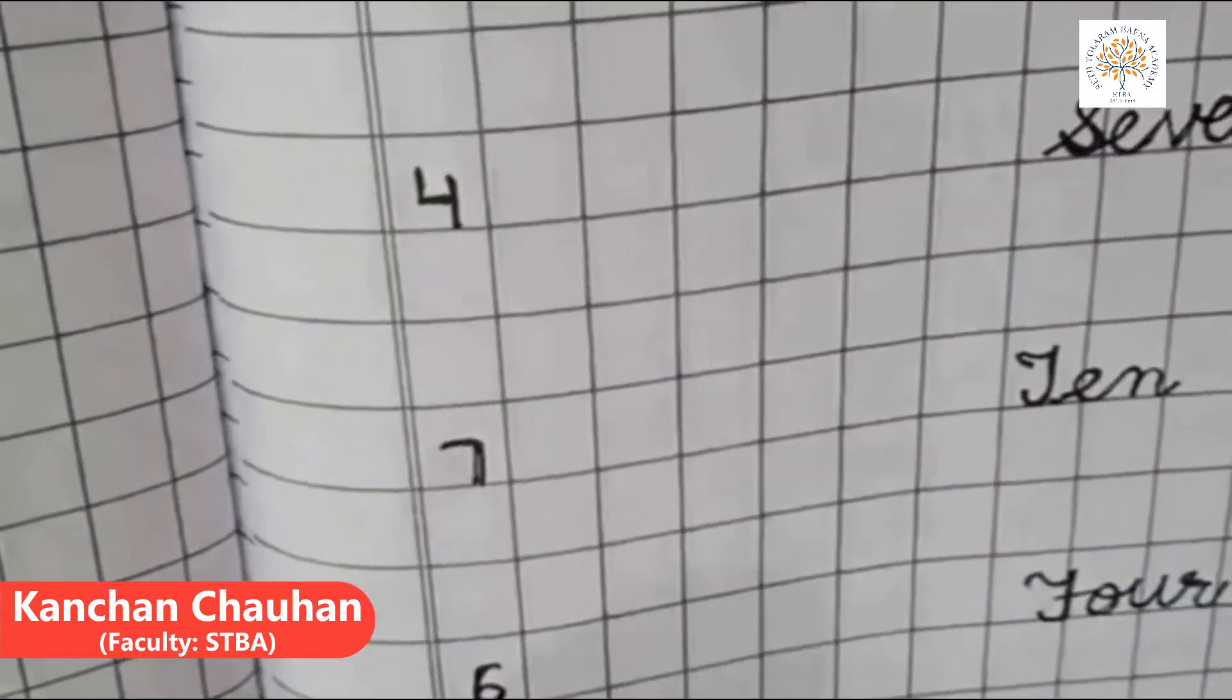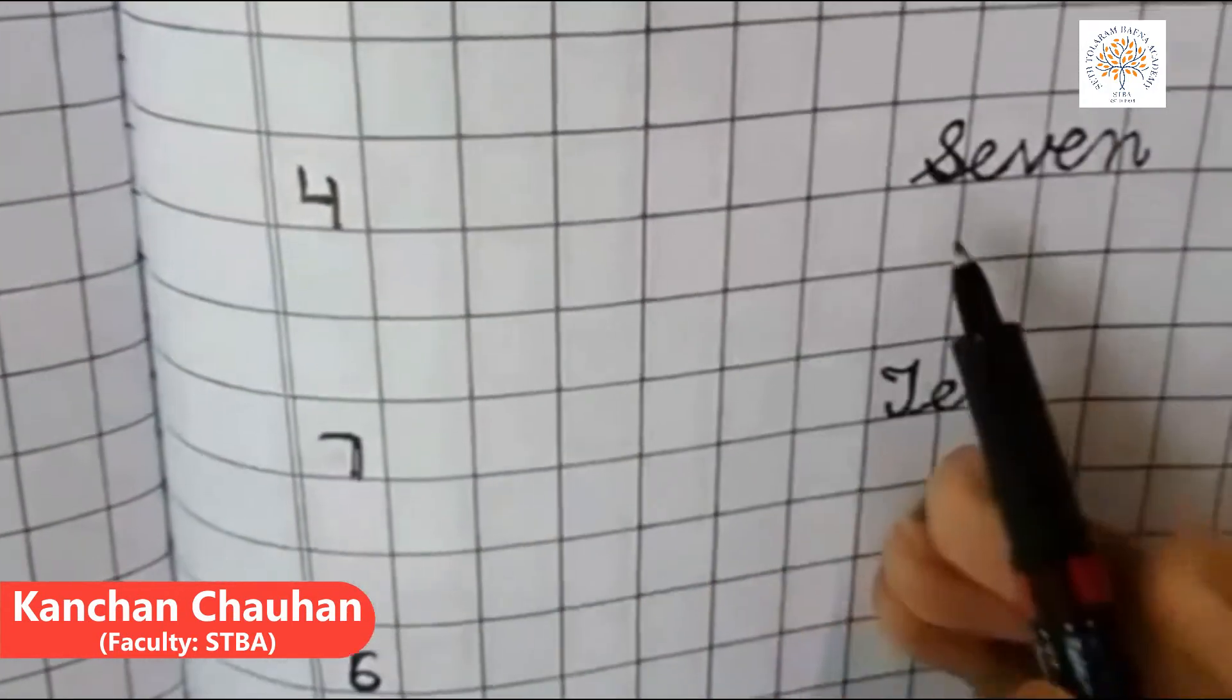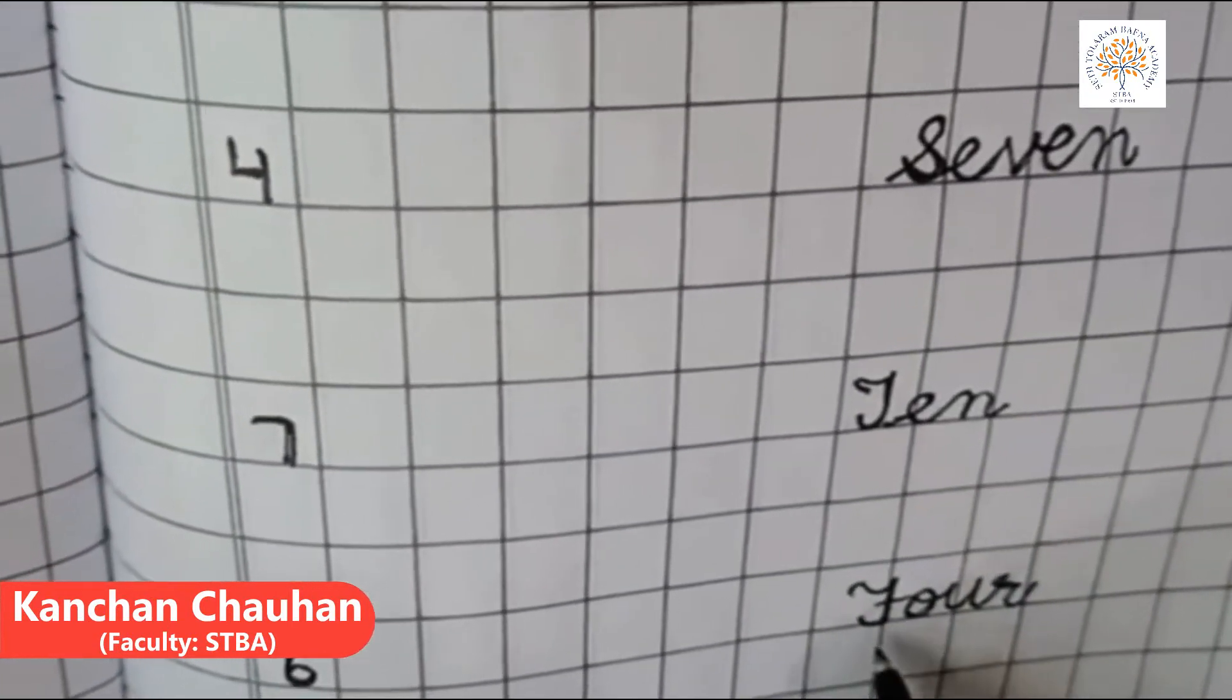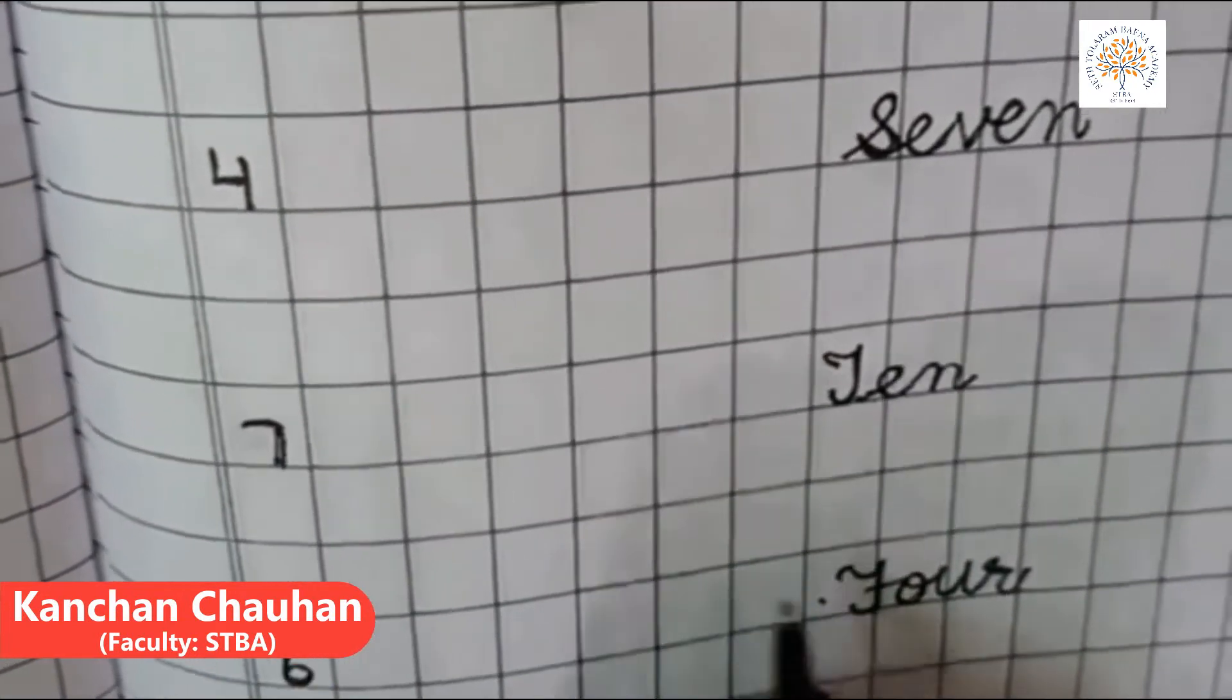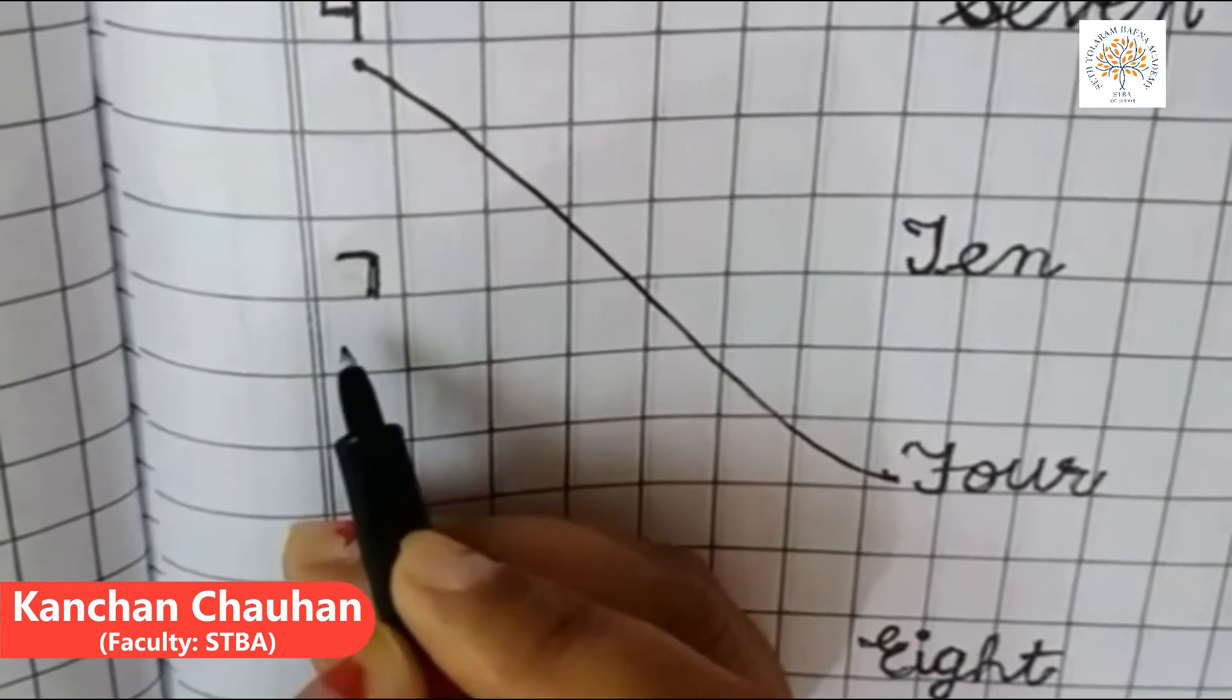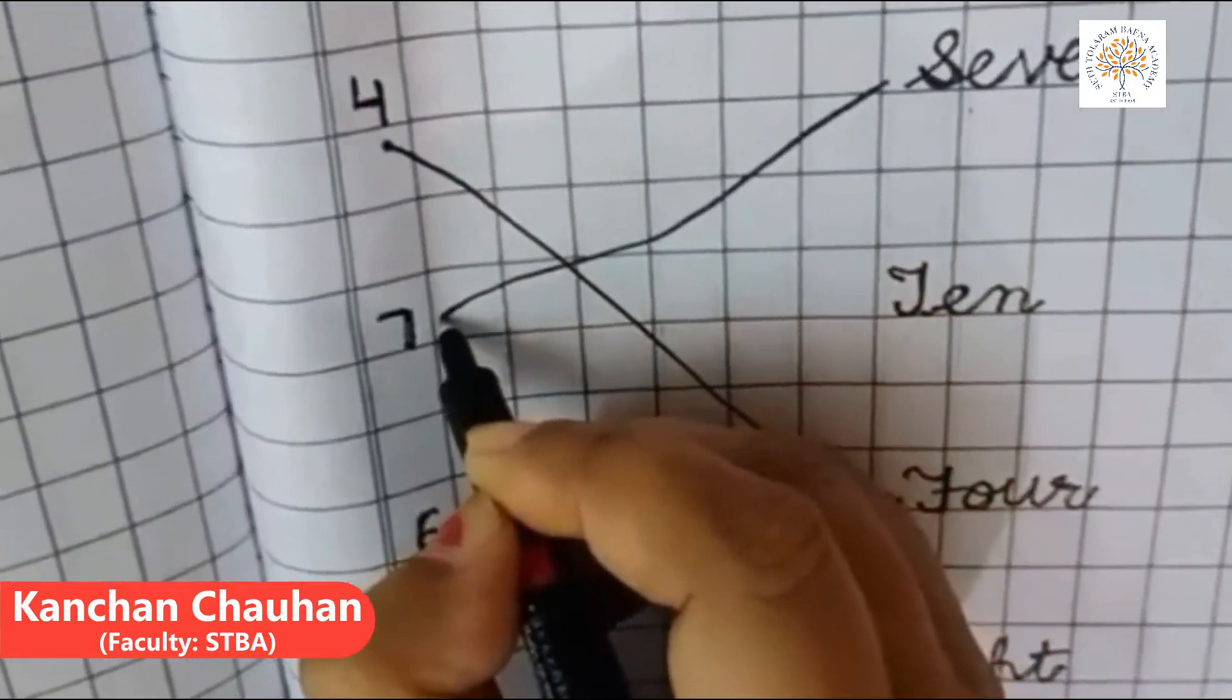Now, let's check it. 4. Now, where is its number name? S-E-V-E-N-7, no, this is not. T-E-N-10, no. Then, F-O-U-R-4. Now, its number name for numeral 4, number name 4 is here. So, next is 7. S-E-V-E-N-7. 7 is here. So, match it.